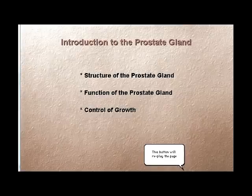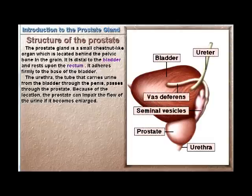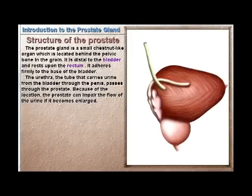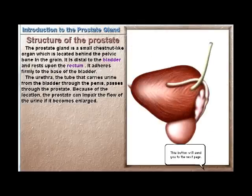Introduction to the prostate gland — structure and function. The prostate gland is a small chestnut-like organ located behind the pelvic bone in the groin. It is distal to the bladder and rests upon the rectum, adhering firmly to the base of the bladder. The urethra, the tube that carries urine from the bladder through the penis, passes through the prostate.